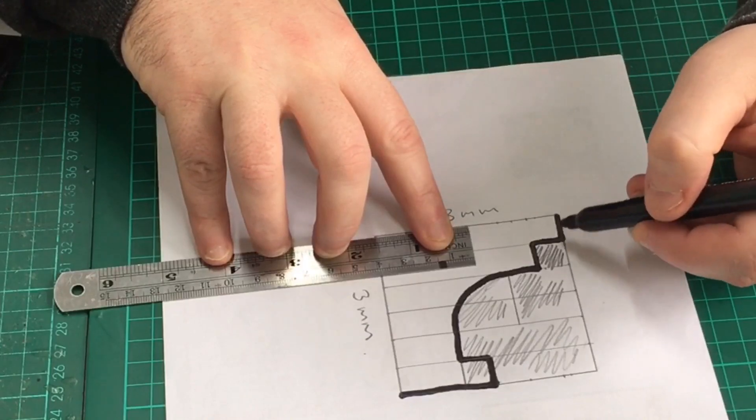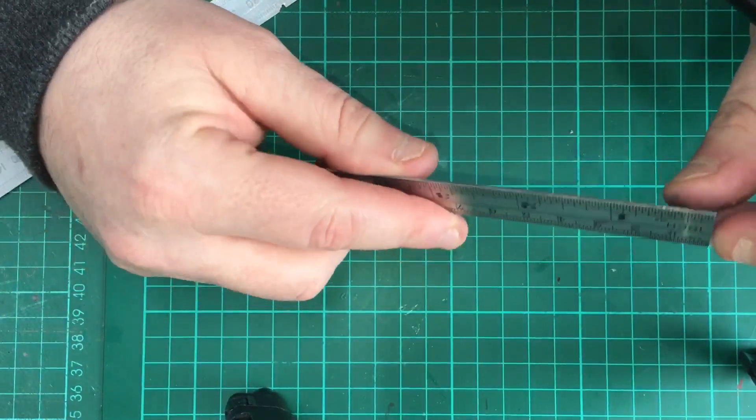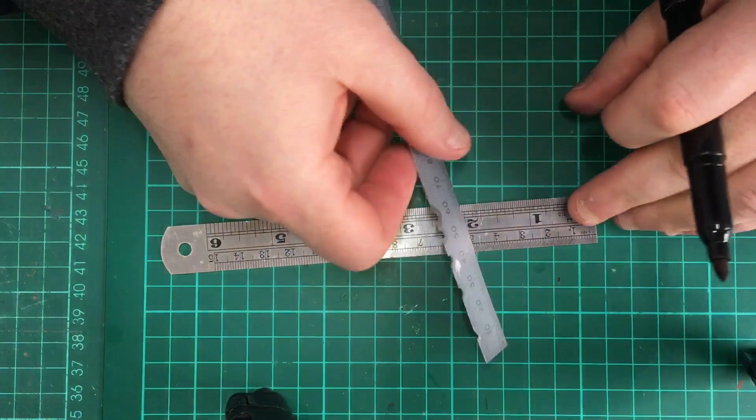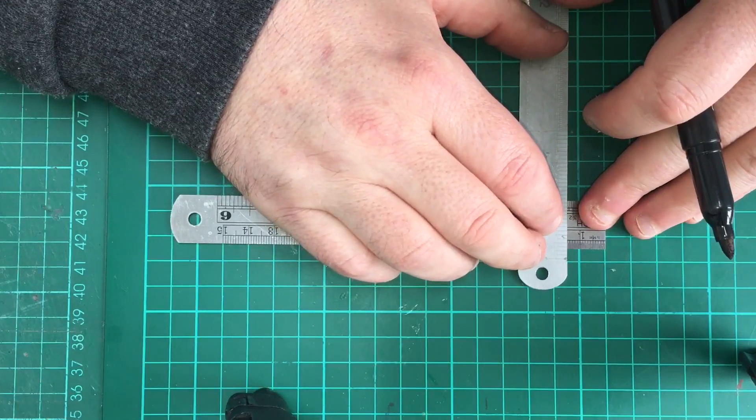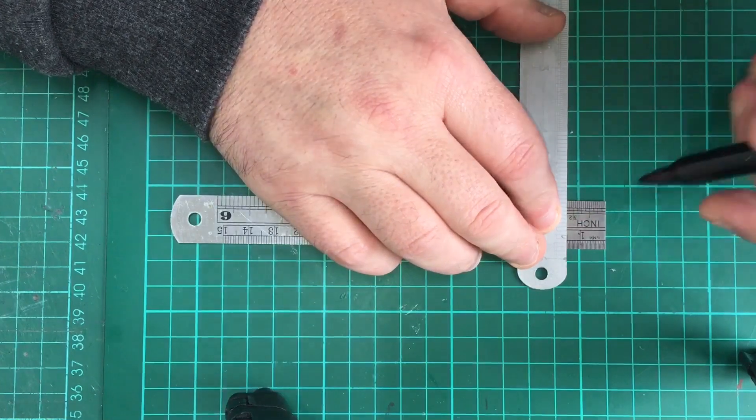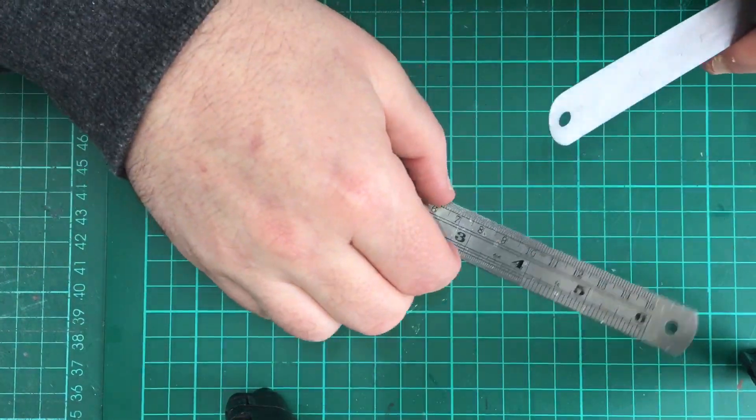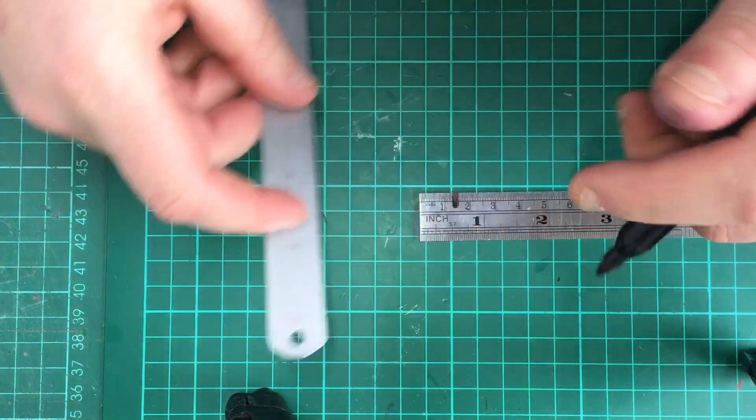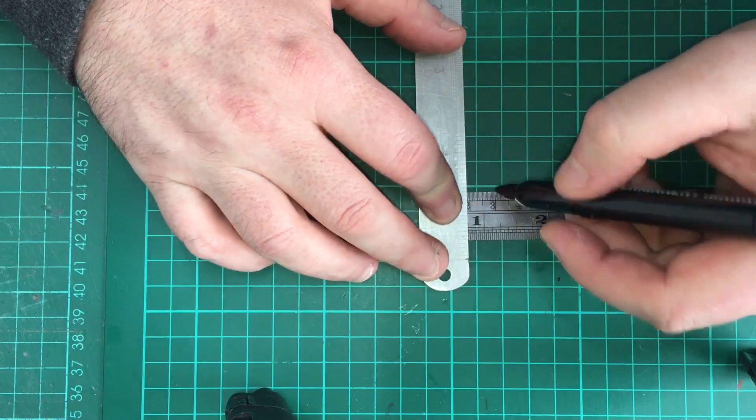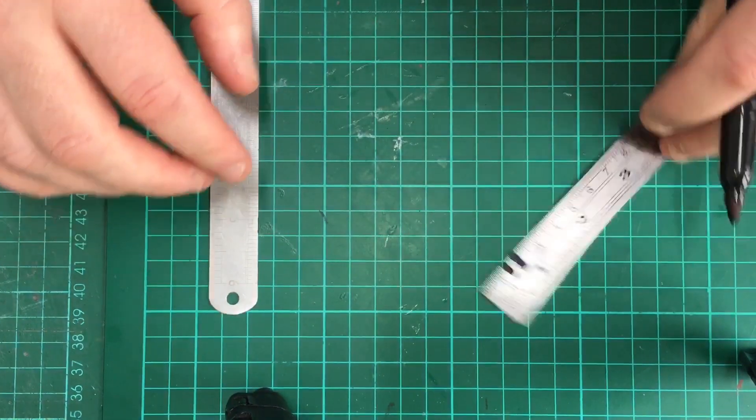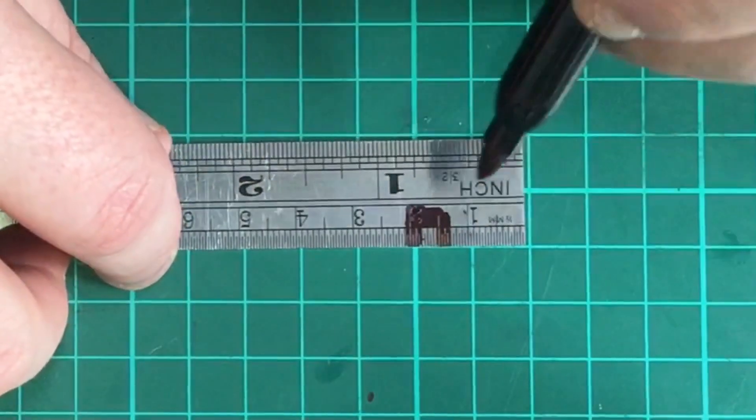So that's why I was saying when you first start out one of the easiest ones to do is just a little step one. I'm just going to use an old ruler. I'm just going to fill in a bit of these blanks. So I'm just going to move it across three.